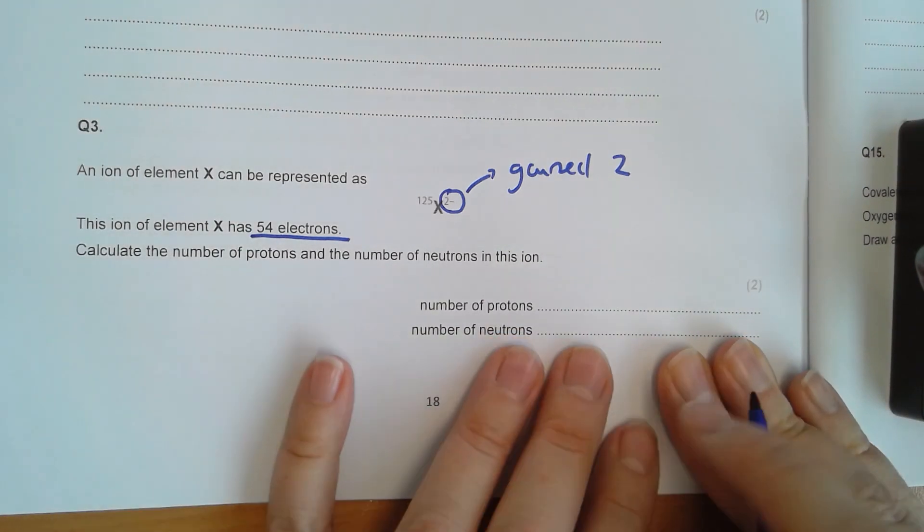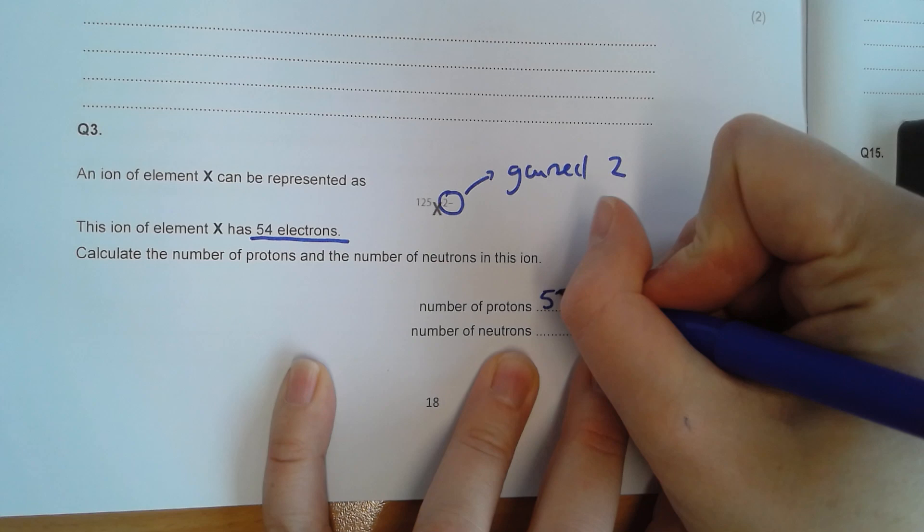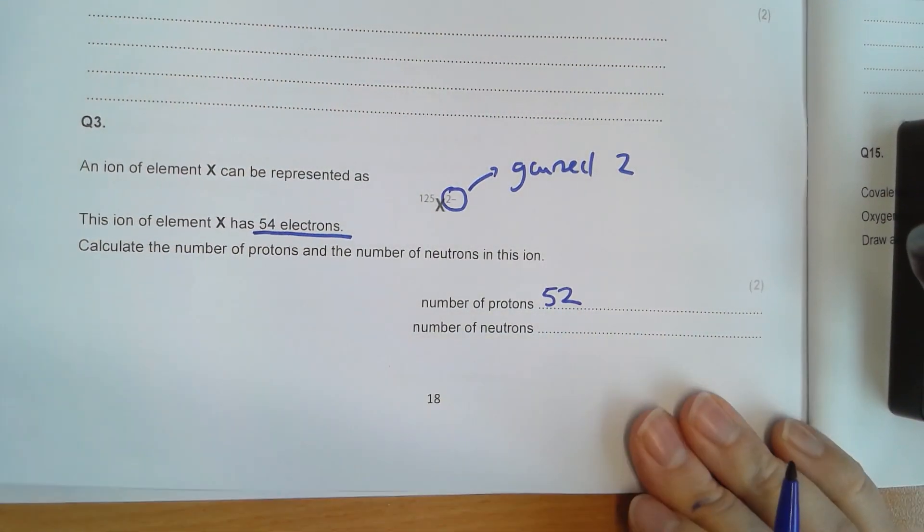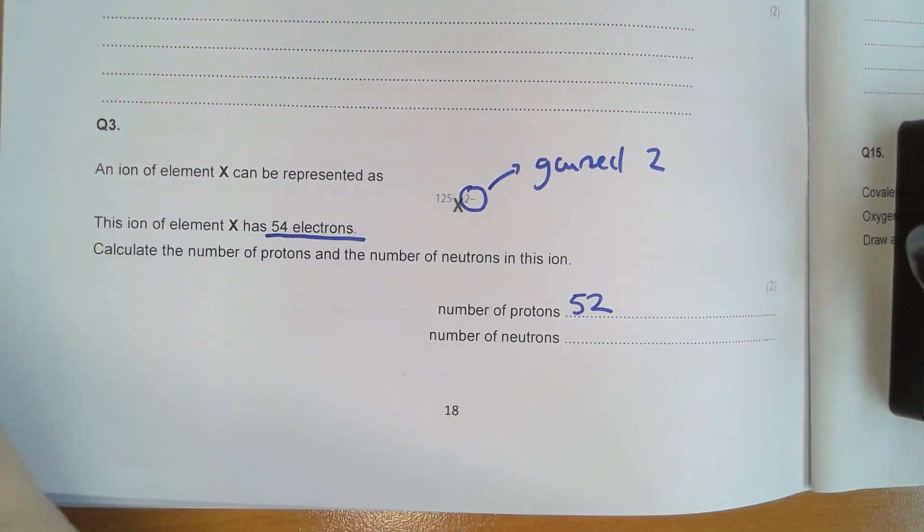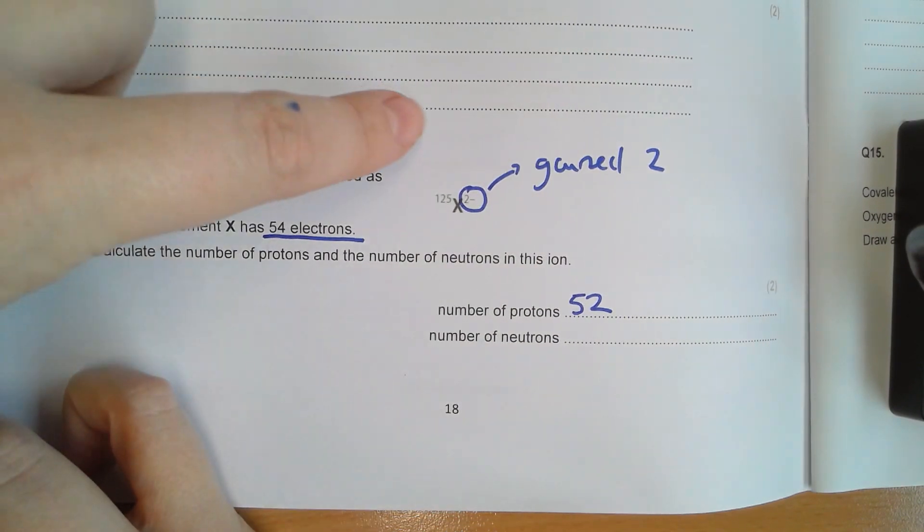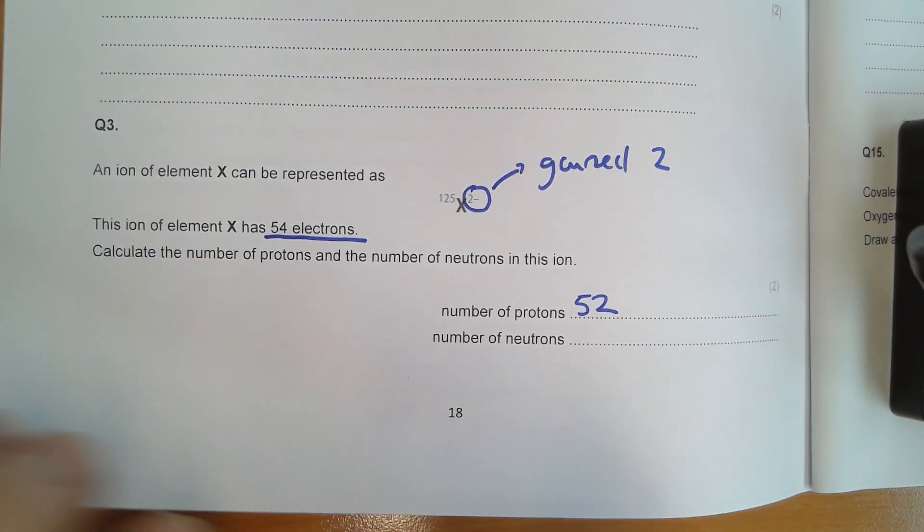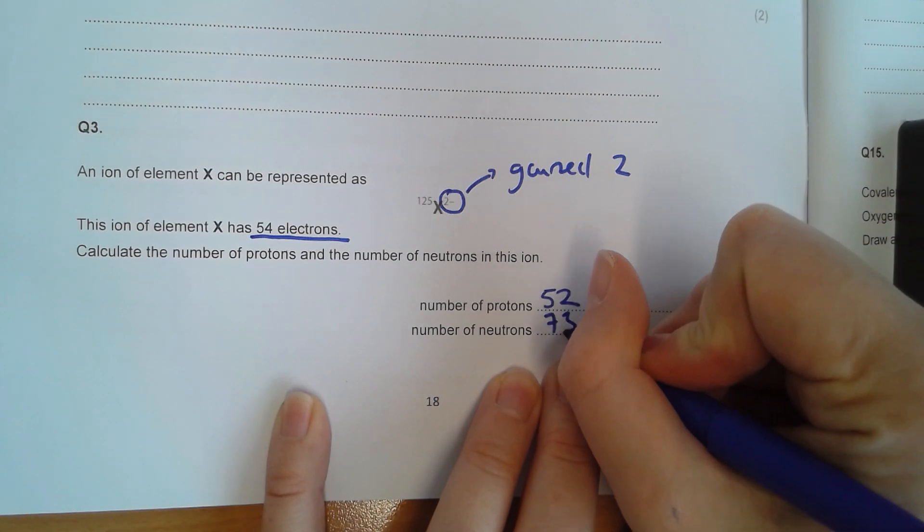If it initially had 52 electrons, then it must have had 52 protons. And once I know the number of protons, the number of neutrons is going to be 125, which is your mass number, minus the number of protons, the number of neutrons is going to be 73.